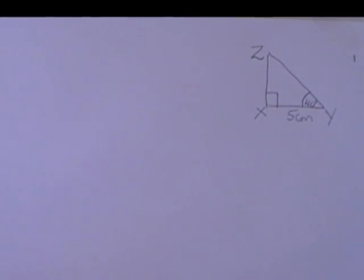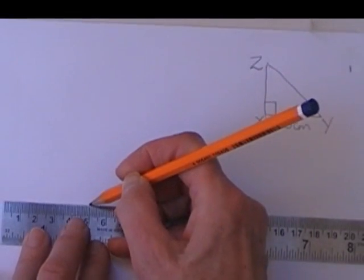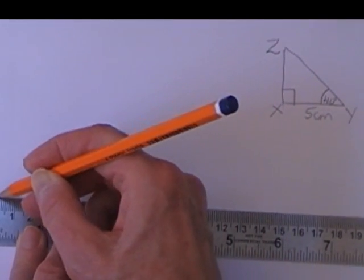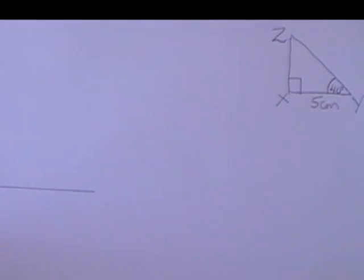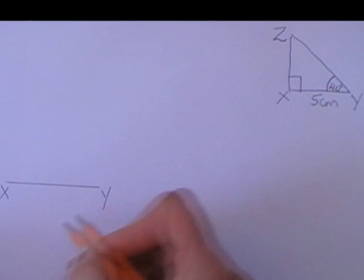So to construct that I draw 5 centimeters, so a line segment of length 5 centimeters and I label both endpoints Y and X.